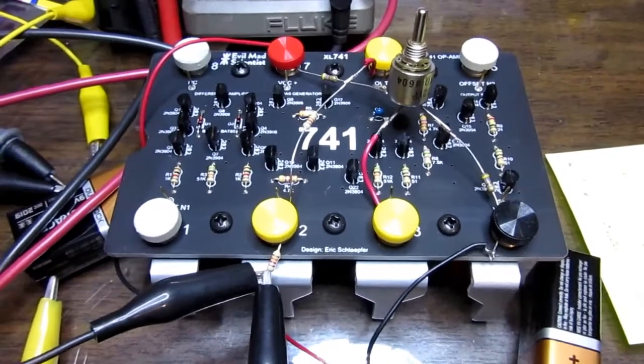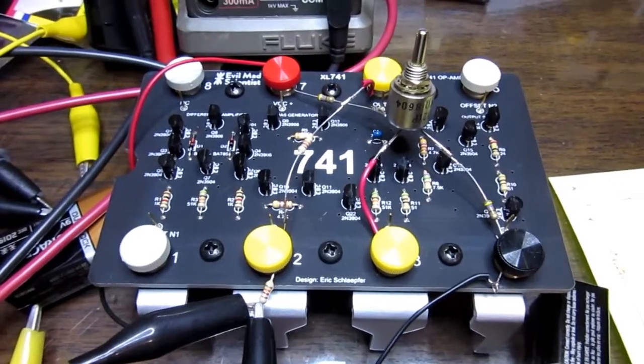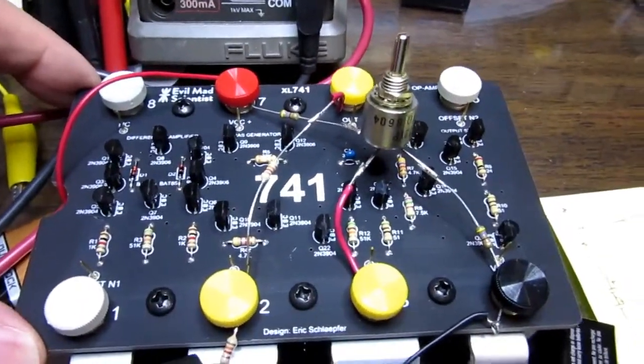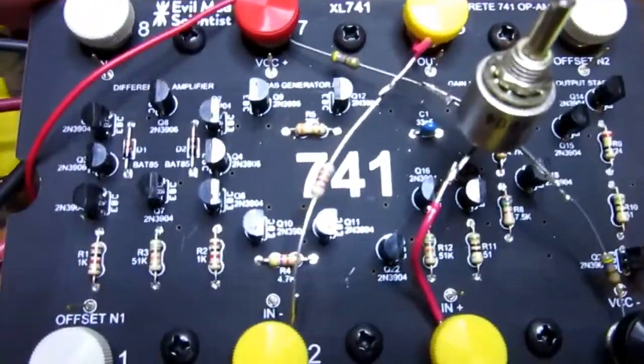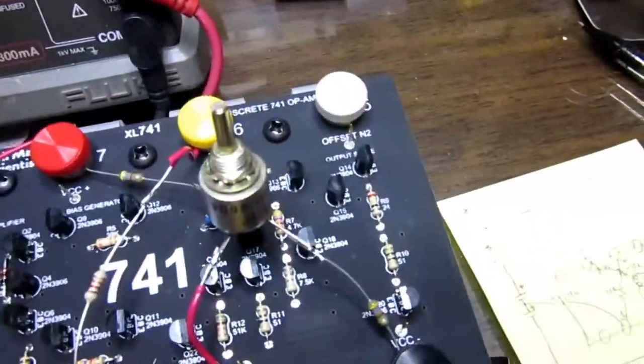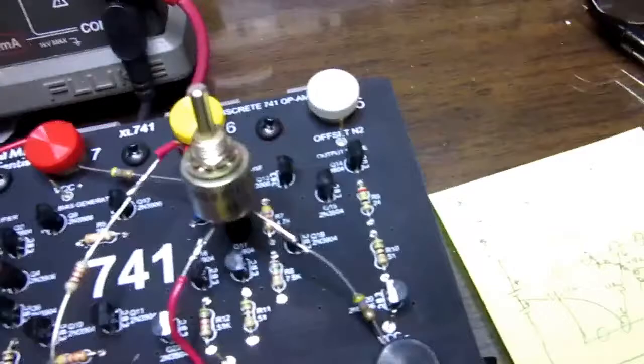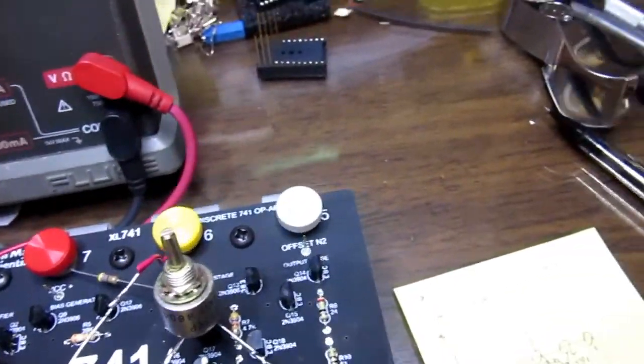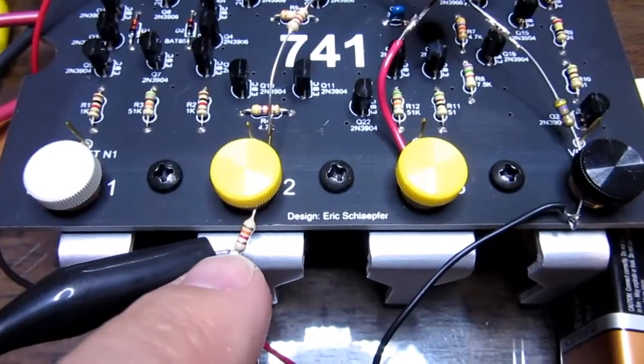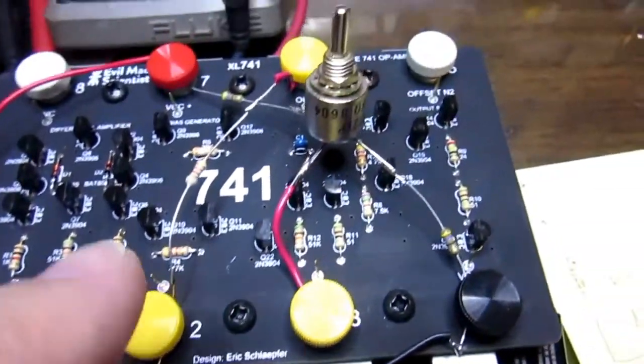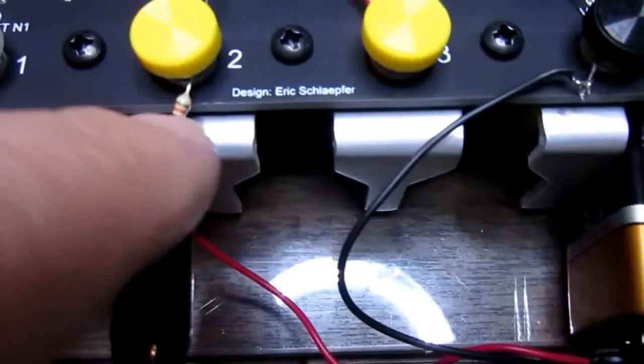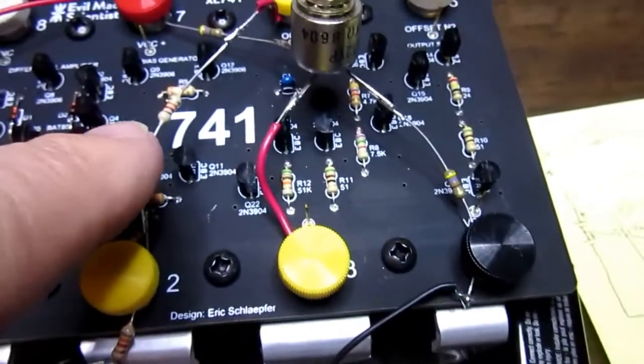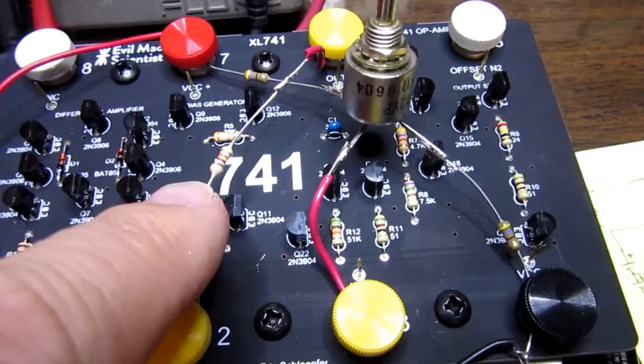This is the Evil Mad Scientist 741 op amp discrete circuit kit. I've got it connected up to act as a non-inverting amplifier with a gain of 2. This point here is the ground. This is one of the two resistors setting gain. This is the other resistor setting gain. They're both the same value.